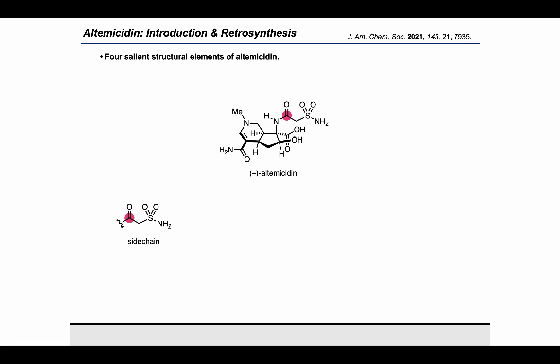In our synthetic planning toward altemicidin, we identified four salient structural elements which we used to guide our overall synthetic strategy. First, we envisioned retrosynthetic cleavage of altemicidin's unusual sulfonamide side chain. We envisioned that synthesis of altemicidin's core in general would be a judicious target because it might enable us to append other side chains in future studies.